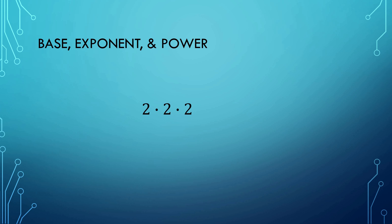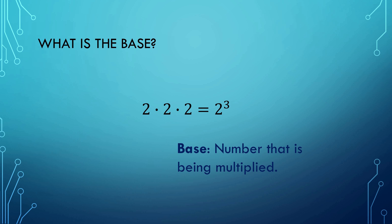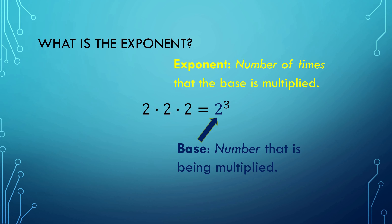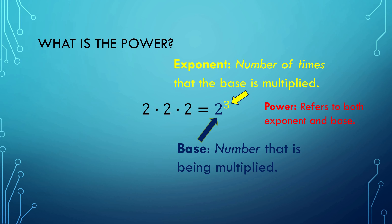If we have 2 times 2 times 2, you can rewrite it as 2 to the 3rd. The base is the number that is being multiplied — in this case, it is 2. The exponent is the number of times that the base is multiplied, which is 3. The power refers to both the exponent and the base.